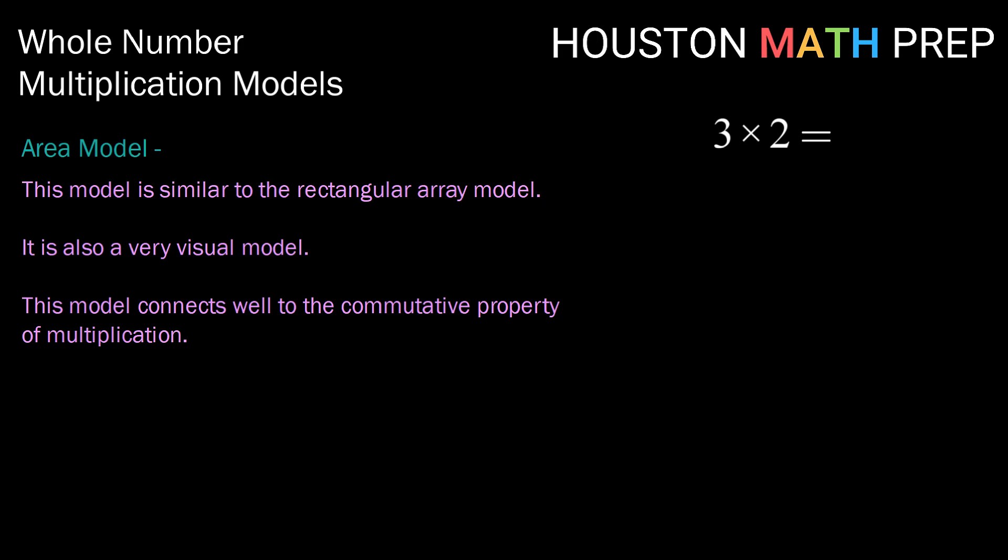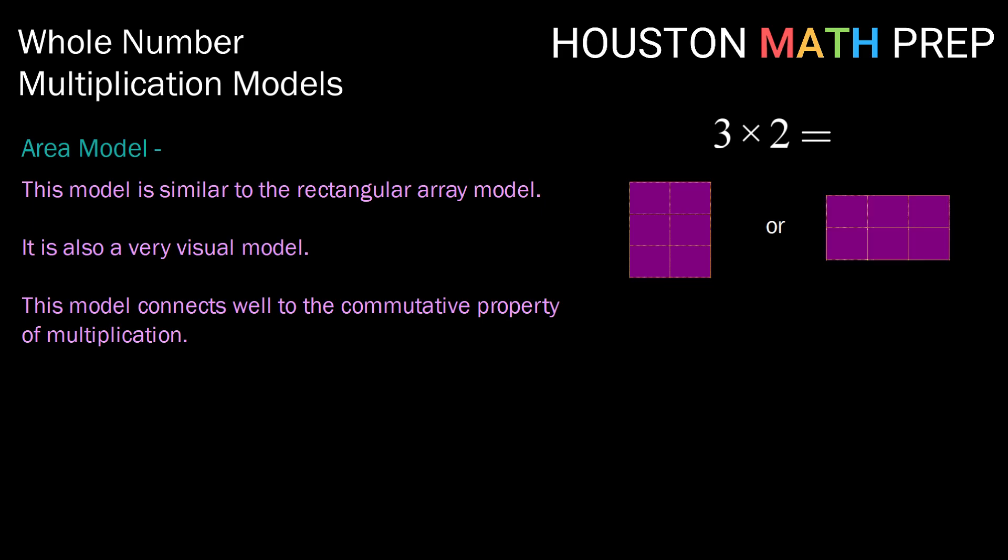So let's take 3 times 2. In the area model, we would take a rectangle and we would divide it into either 3 rows with 2 items each or 2 rows with 3 items each. Students can then count the number of blocks in each representation and get that the area or the answer to our multiplication of 3 times 2 is 6.